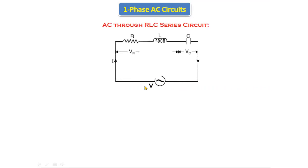Let's see the circuit diagram of the RLC series circuit. In this diagram, a resistor, inductor, and capacitor are connected in series — that is why this circuit is called the RLC series circuit. We are giving it an AC supply. If we give AC supply, we will see how the circuit behaves.